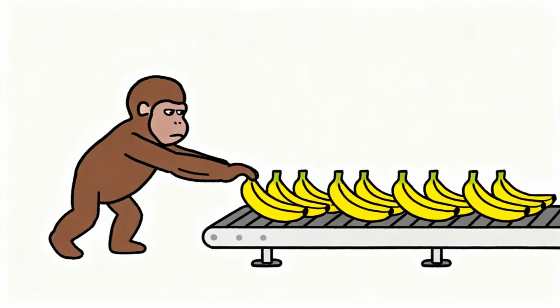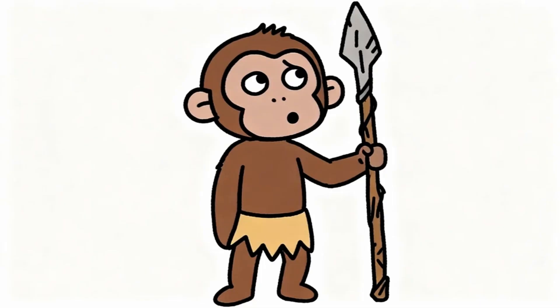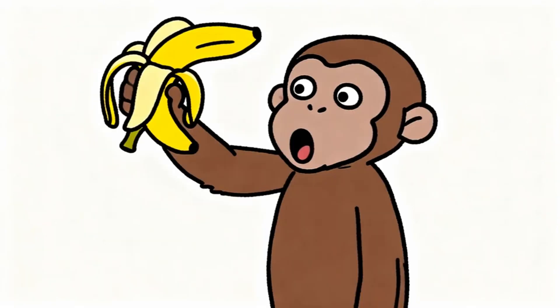What if I told you that your brain operates exactly like a monkey chasing bananas, except the bananas keep getting easier to find and less satisfying to eat? What if the very thing that helped our ancestors survive is now destroying our ability to feel happy? Monkey discovers something shocking about dopamine that changes everything.